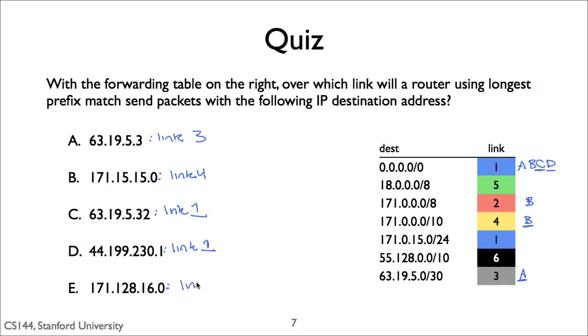The answer for E, 171.128.16.0, is link 2. This address matches two prefixes: the default route and 171.0.0.0/8. It doesn't match 171.0.0.0/10 because it differs in the 9th bit. 171.0.0.0/8 is the longest prefix, so the router will forward this packet on link 2.